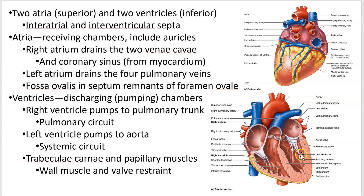Below the atria are the ventricles. There's a right ventricle which gets blood from the right atrium, and a left ventricle which gets blood from the left atrium. Notice that the walls of the left side are a lot thicker — the septum and the outer wall of the left ventricle are thicker because they're doing the pumping out to the system, out to the body and the head and shoulders via the aorta. The right ventricle pumps to the pulmonary trunk, which goes out to the lungs; the left ventricle pumps to the aorta, which goes out to the body.